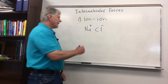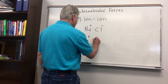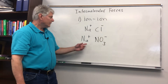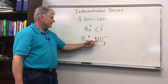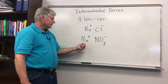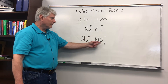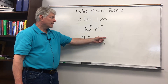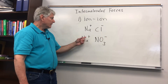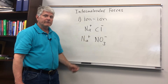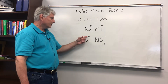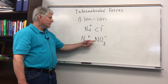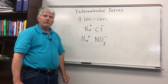Another example is sodium nitrate. Here we have ion-ion attractions, but instead of having just two atoms, we have an atom and a molecular ion. The NO₃ molecular group has a negative charge on it, and sodium has a positive charge. So we again have attractions between a positively and negatively charged species, and sodium nitrate is held together very strongly.